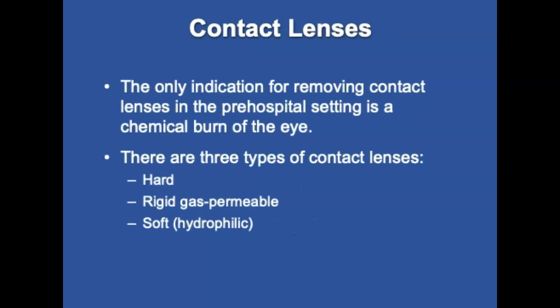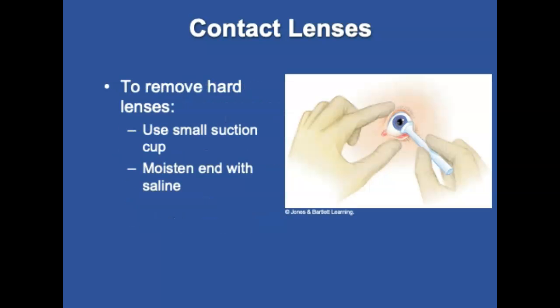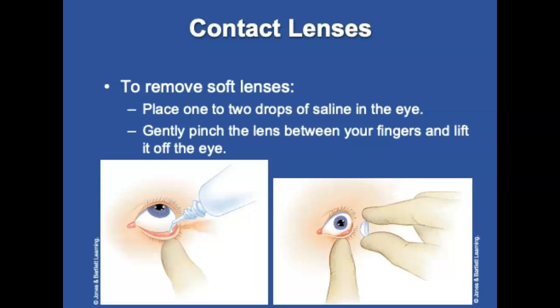Some patients will be wearing contact lenses. The only indication for removing lenses in the pre-hospital setting is for a chemical burn. There are three types: hard, rigid, or soft. To remove a hard contact lens, use a small suction cup moistened with saline. To remove a soft lens, place two drops of saline in the eye and gently pinch the lens between your gloved thumb and index finger and lift it off. Advise emergency department staff if the patient was wearing contact lenses or still is.